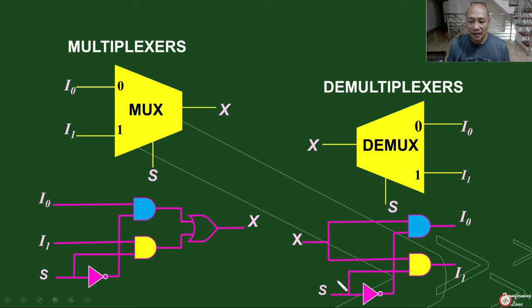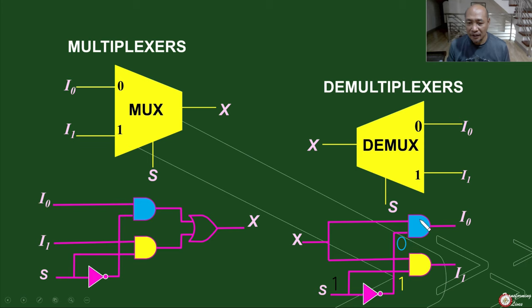For example, let's say S is equal to 1. If S is equal to 1, then our input here will be equal to 1 while the input at the other AND gate will be equal to 0. Since this input is 0, then S is equal to 0 on that side.